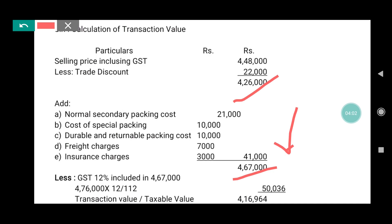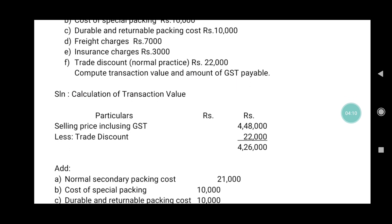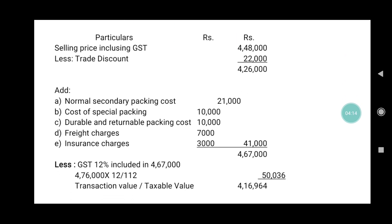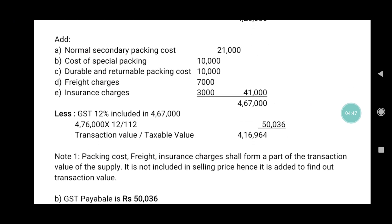Now we apply the GST rate on the actual taxable value. The GST rate is 12%. Since the selling price of ₹4,67,000 already includes GST, we gross up: 4,67,000 × 12 ÷ 112 = ₹50,036. So the GST payable is ₹50,036, and the transaction value (excluding GST) is ₹4,16,964.